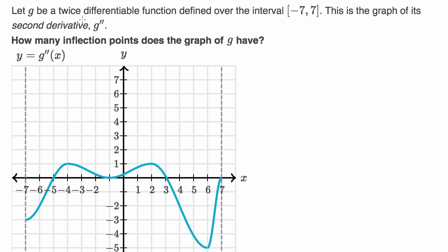Let g be a twice differentiable function defined over the closed interval from negative seven to seven, including those endpoints. This is the graph of its second derivative, g prime prime — y is equal to g prime prime of x. They ask us: how many inflection points does the graph of g have?